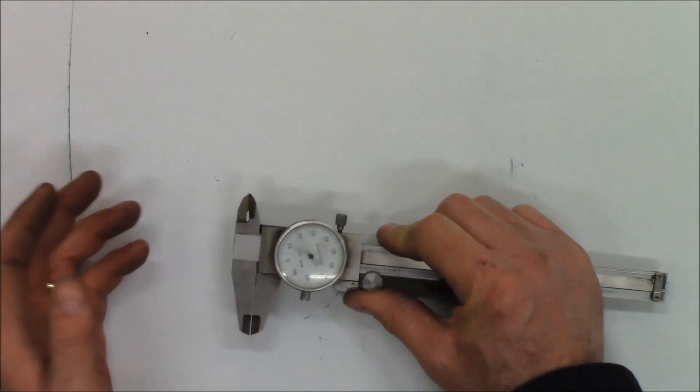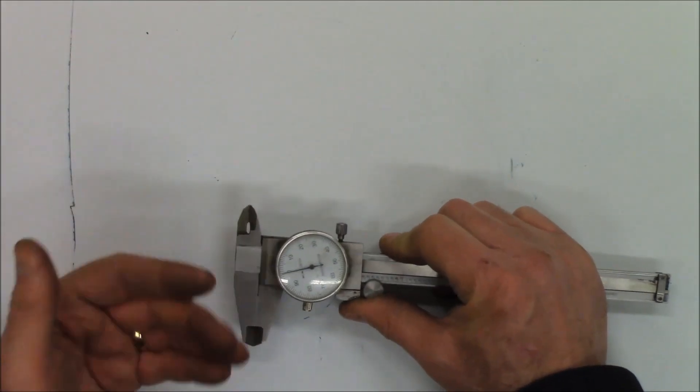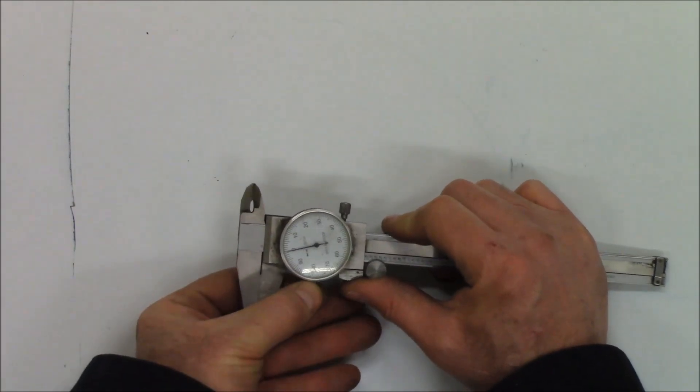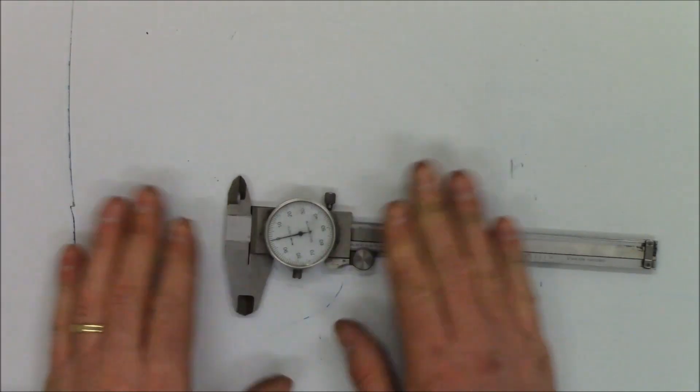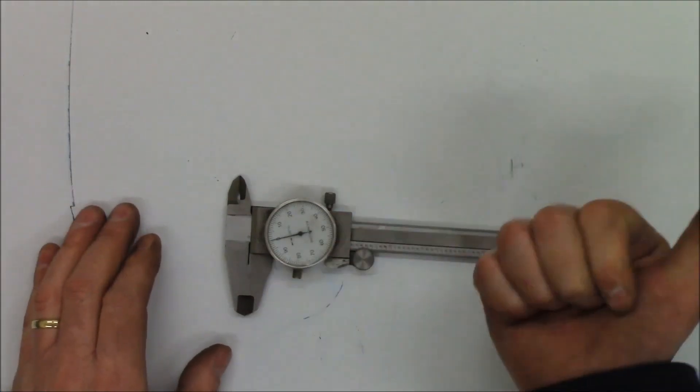Then I just do it a couple times and make sure it's consistently finding zero. Then I can lock the scale down. When these no longer consistently find zero, I chuck them.